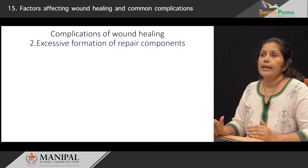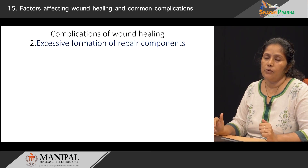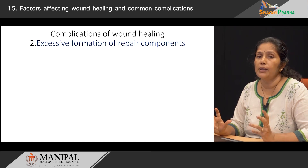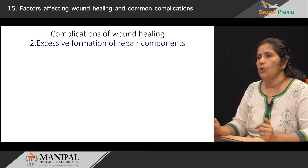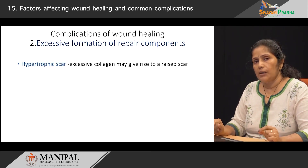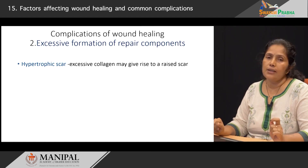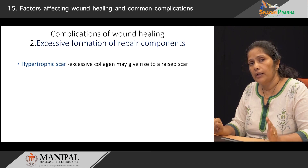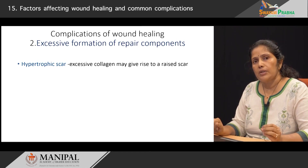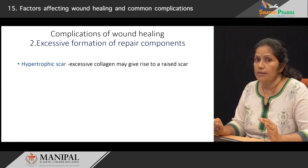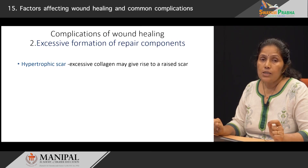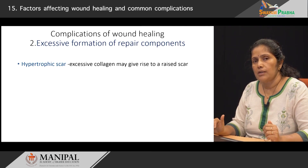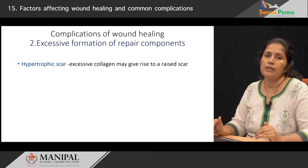Now let us see what happens if there is excessive formation of the repair components. If there is excessive formation of granulation tissue, the first complication we can see is what is known as a hypertrophic scar. This is because of excessive collagen formation which gives rise to a raised scar. Such hypertrophic scars are very commonly seen in patients post burns or thermal injury where the injury is quite deep and goes into the deeper dermis. The excessive collagen tissue formation results in a scar which rises higher than the surrounding tissues.